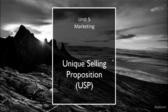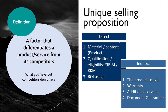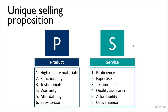The unique selling proposition, or USP, is a factor that differentiates your product and service from competitors. It can be direct — meaning the material, the uniqueness or content of the product, and any certifications. Or indirect — meaning how the product is used, warranty, and additional services. For example, for a product, you can do testimonials, and for services, testimonials as well.